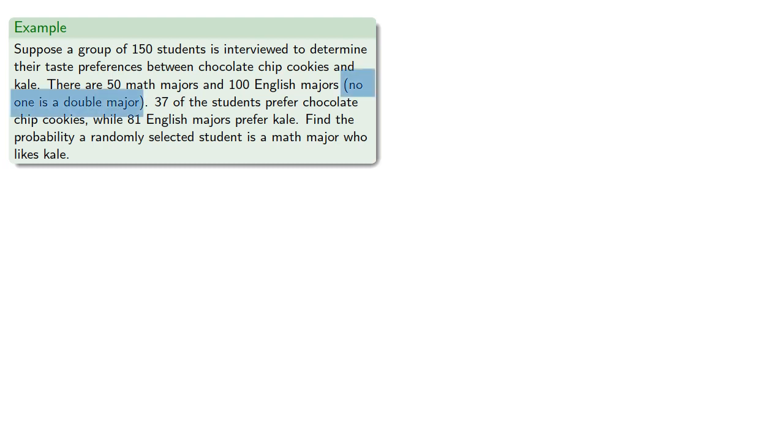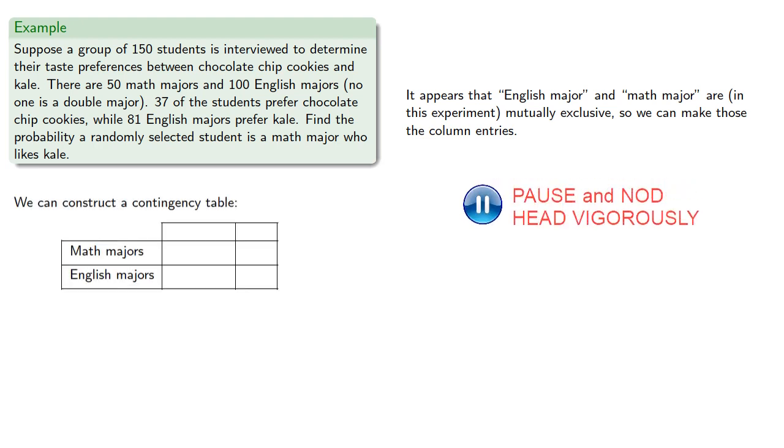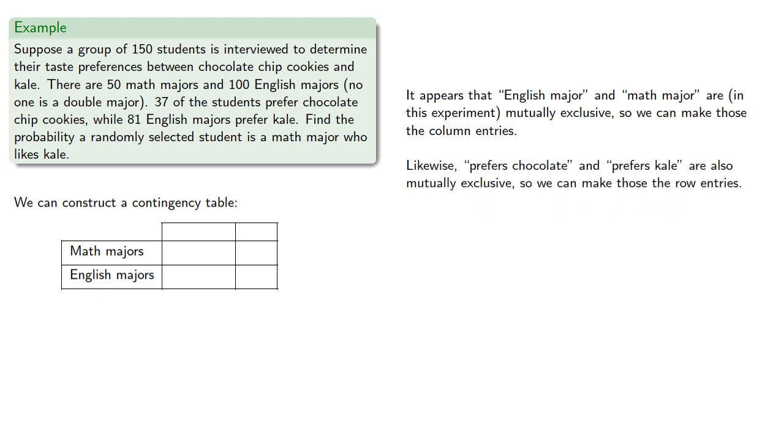Now we're told that no one is a double major, and so it appears that English major and math major are, in this experiment, mutually exclusive, so we can make those the column entries. Likewise, prefers chocolate and prefers kale are also mutually exclusive. You can't prefer both, so we can make those the row entries.